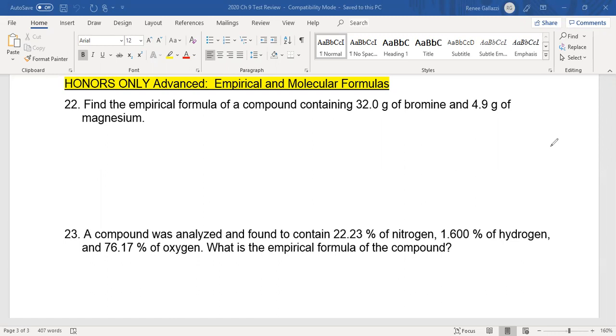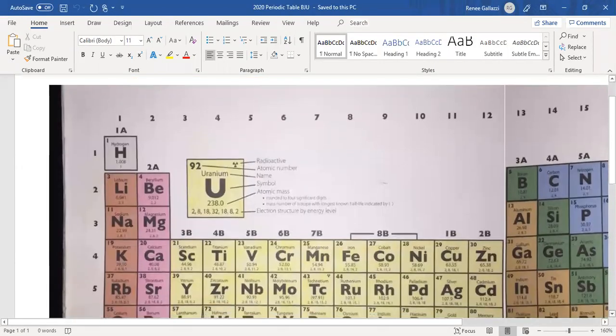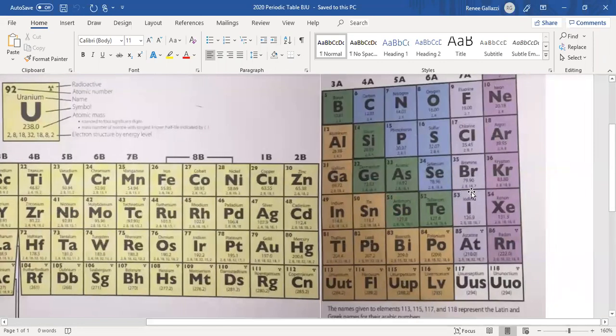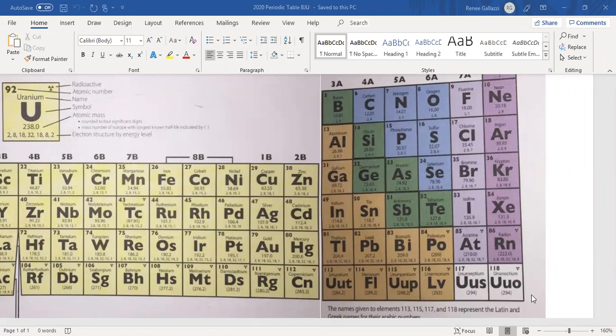For this one we're going to have 32 grams of bromine and we've got 4.9 grams of magnesium. We're converting these first to moles and so we'll go ahead and work on bromine first. Converting it to moles, bromine, and remember the bottom matches. So we've got grams of bromine and so it's bromine over bromine.